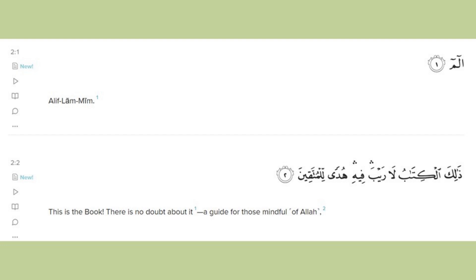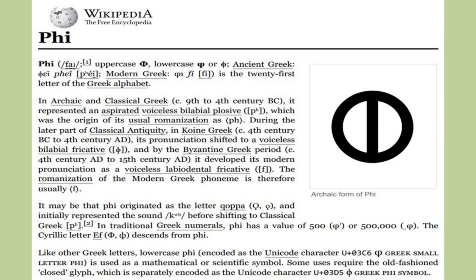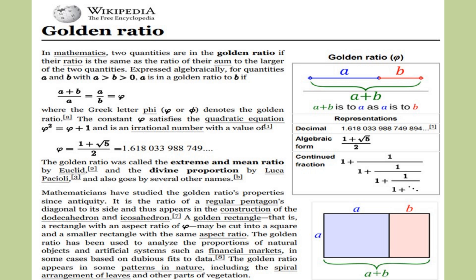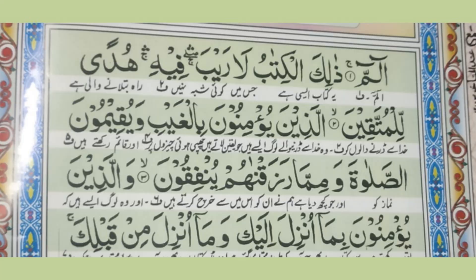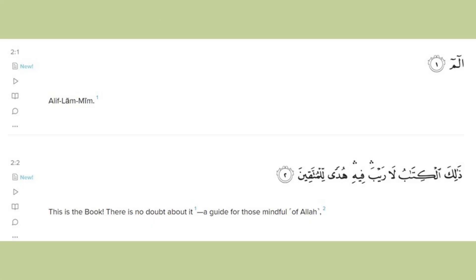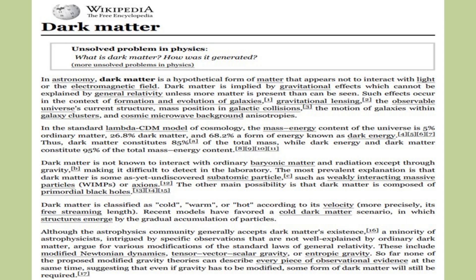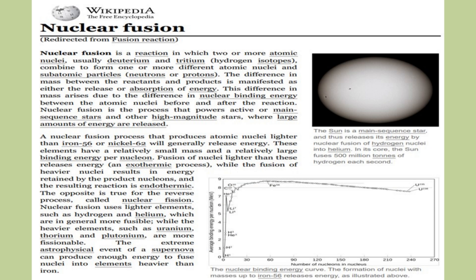Chapter 2 deals with light emission, and verse 2 talks about Phi, which is related to magnetic flux and wave functions in physics and represents the golden ratio in mathematics. The verse states: 'This is the book, there is no doubt about it, a guide for those mindful of Allah.' If we decipher this and read properly, it translates as: 'Phi is the book, a guidance for the God-conscious element.' Furthermore, verses 2 to 20 are about dark matter, and later verses are about fusion reactions.